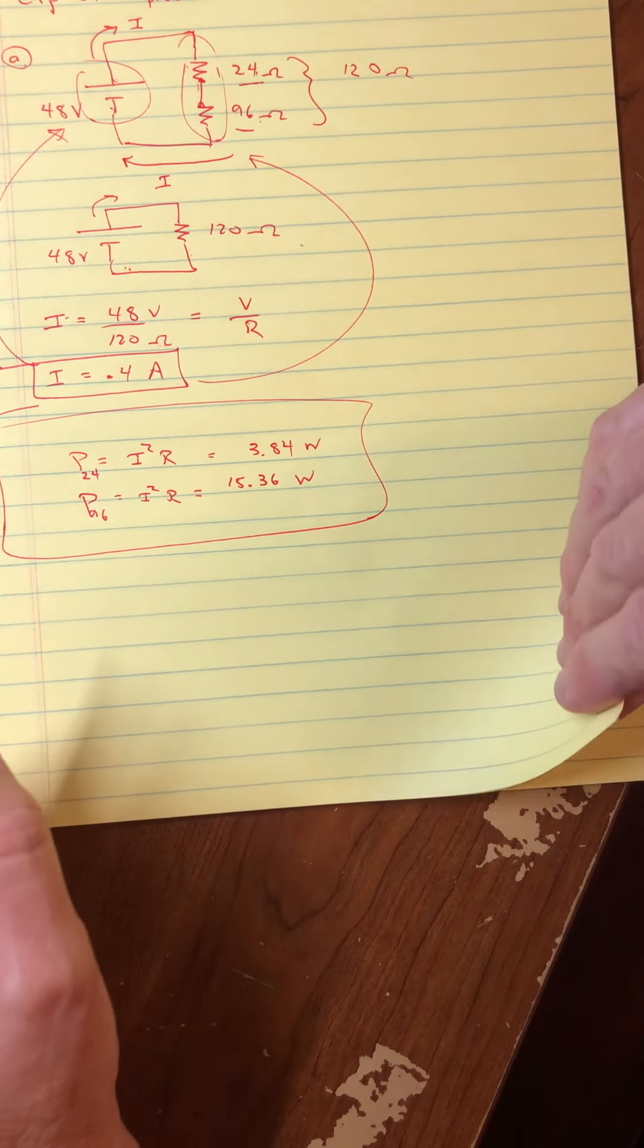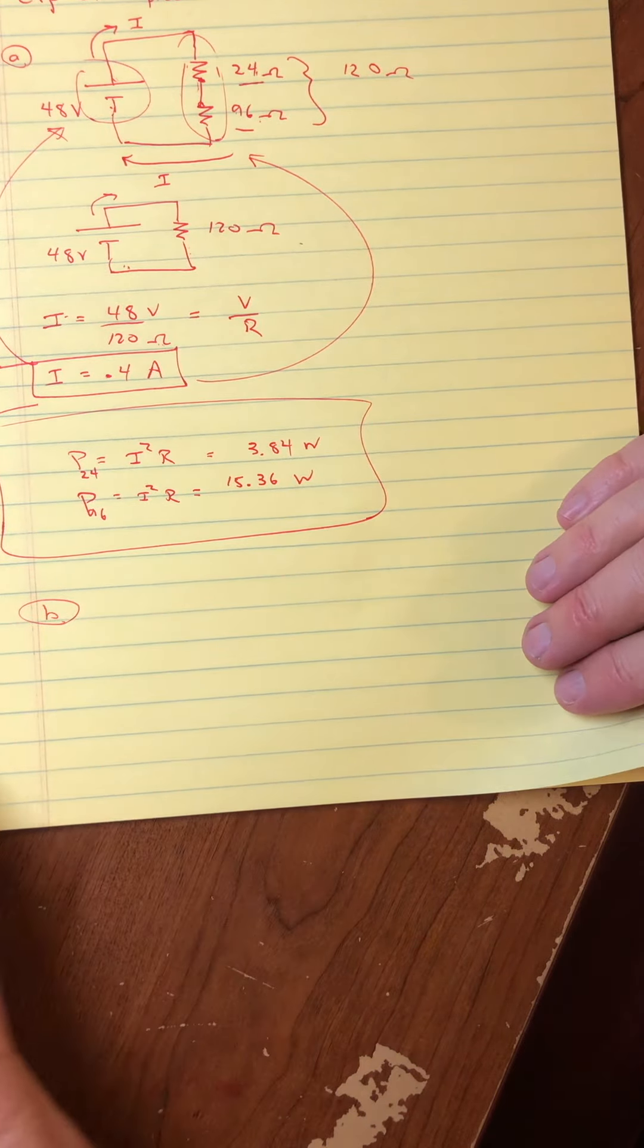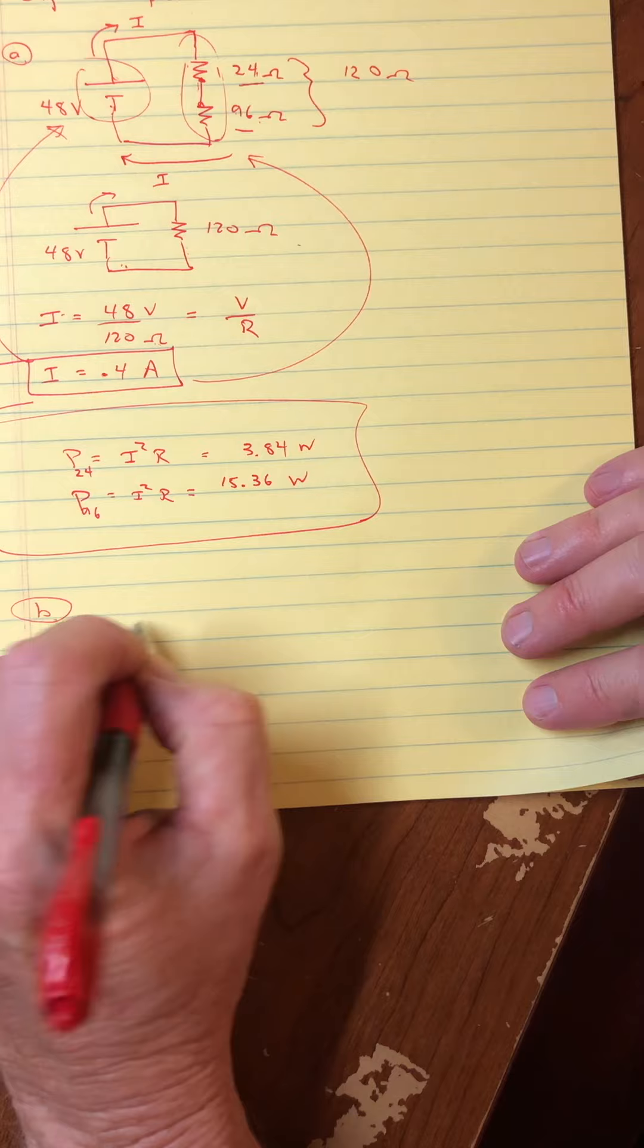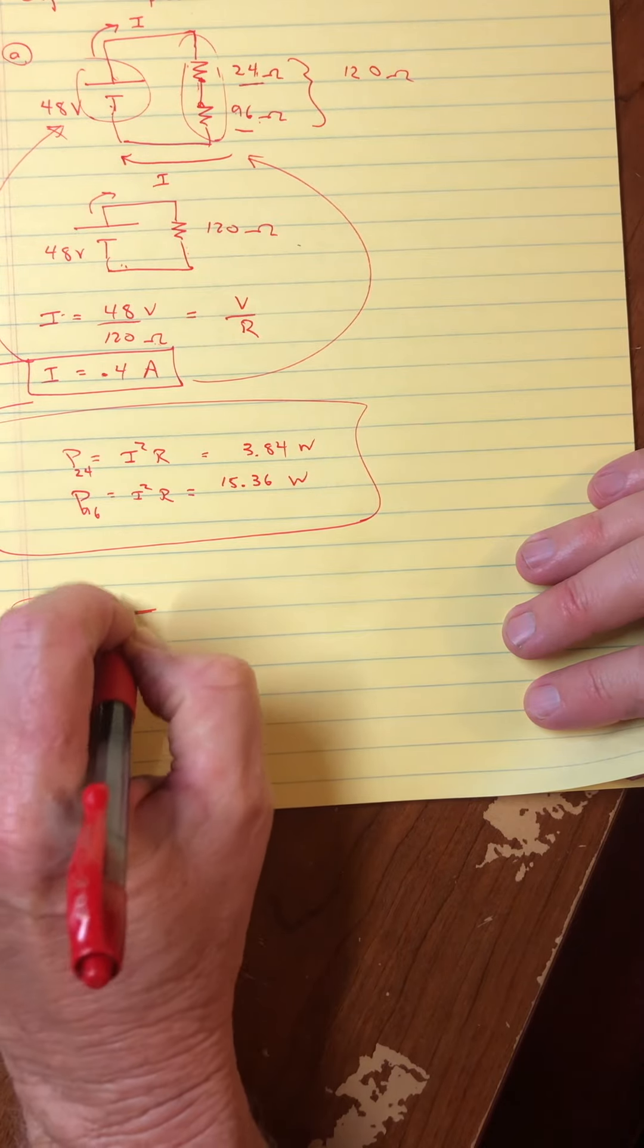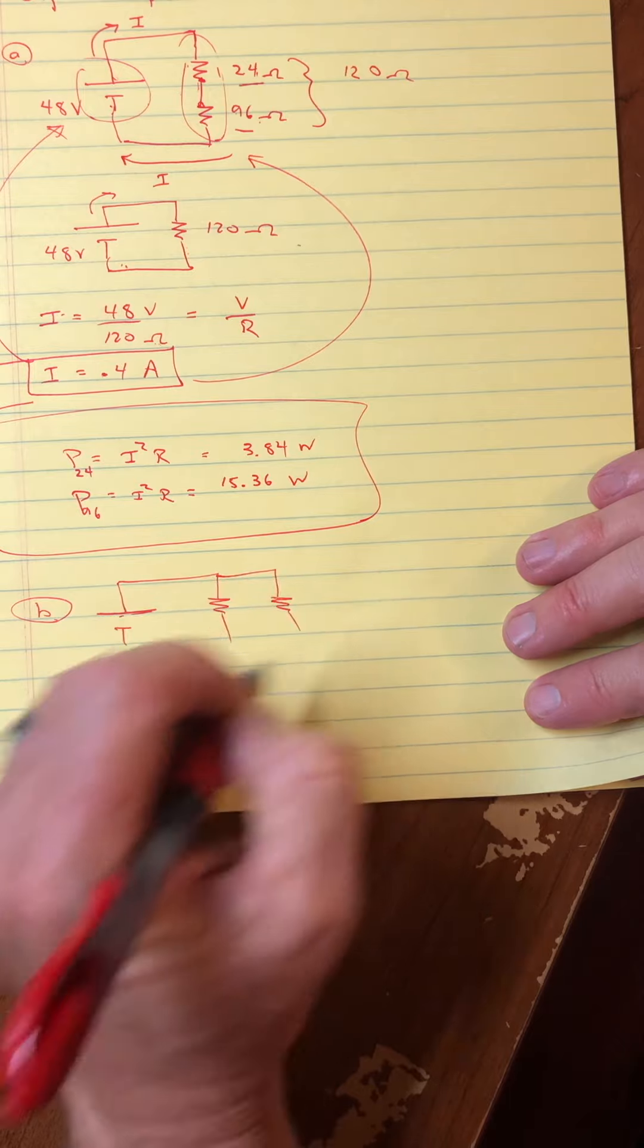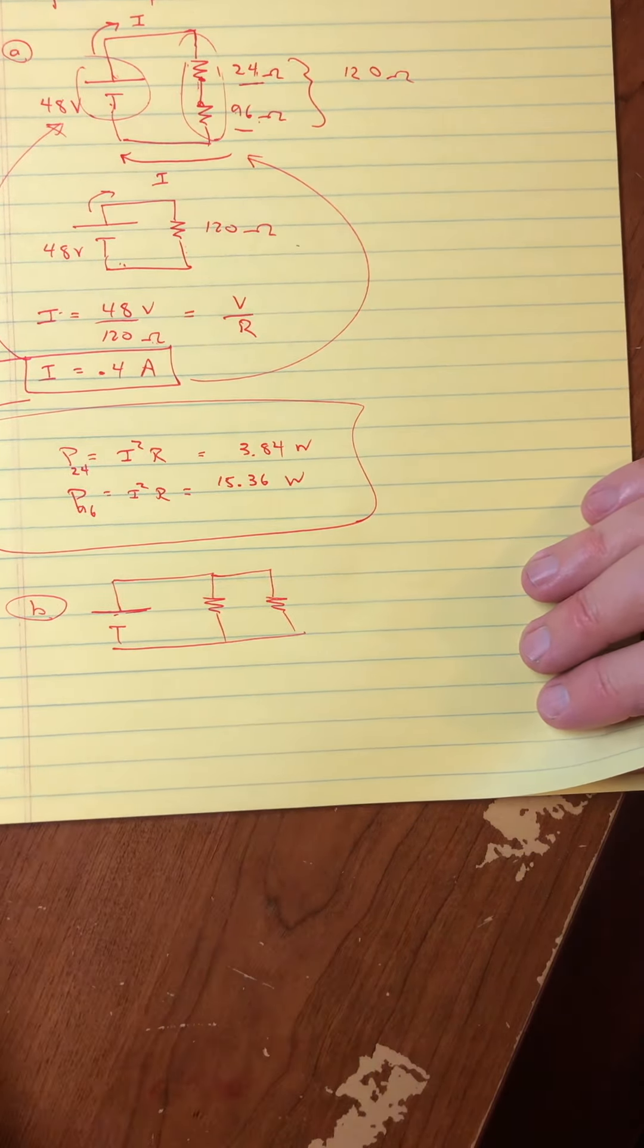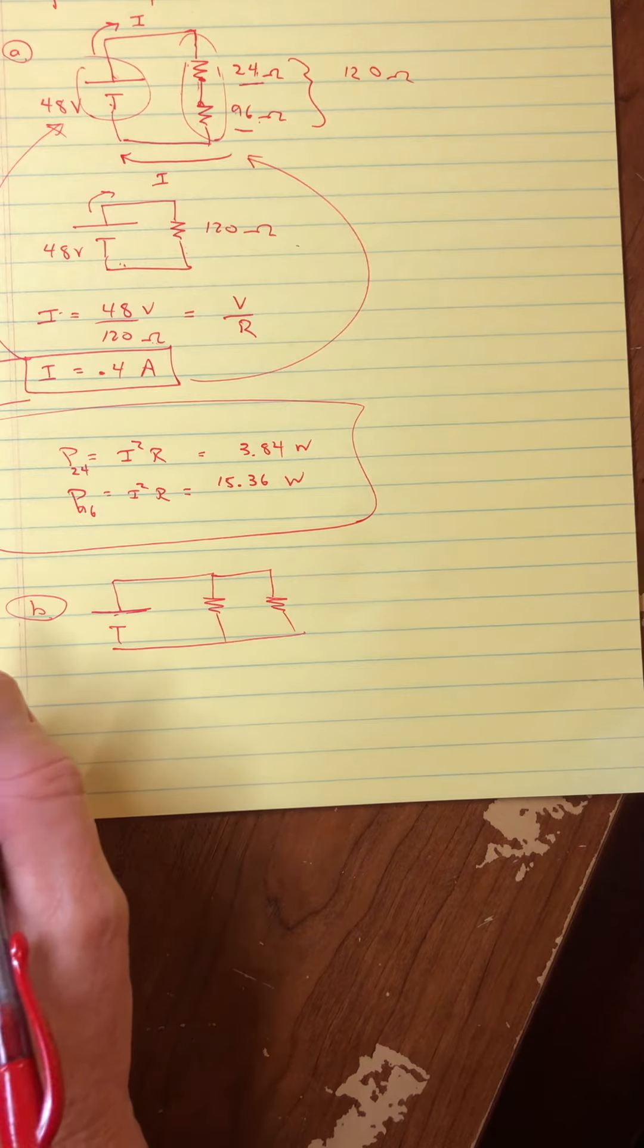All right. So there's the easier of the two. Maybe, maybe not. No, maybe this is easier. But let's do these two in parallel for part B. Part B says repeat this for them in parallel.